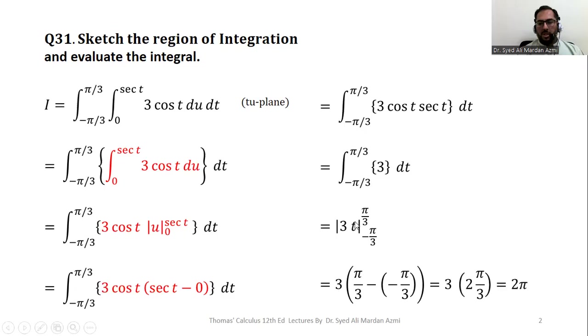I have taken this 3 outside and I have replaced this t with upper limit minus lower limit. After simplification, I get 2π as my answer. This concludes the first part of the question.